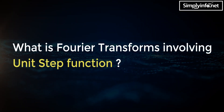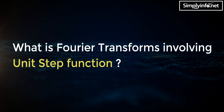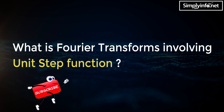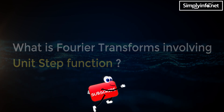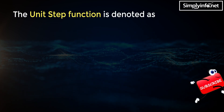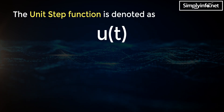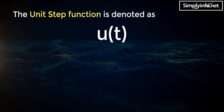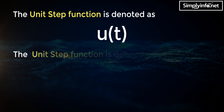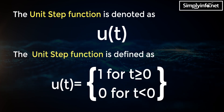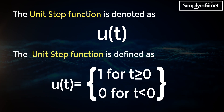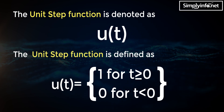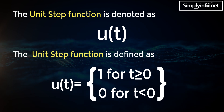What is the Fourier transform involving the unit step function? The unit step function is denoted as u(t). It is defined as u(t) equals 1 for t greater than or equal to zero, and u(t) equals zero for t less than zero.